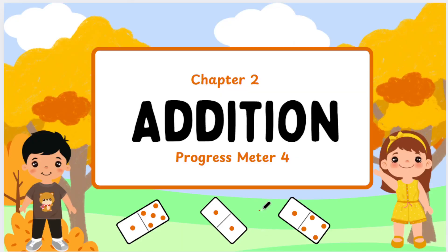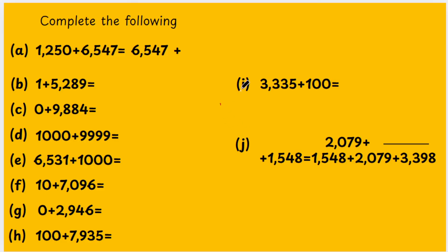Let's move on with some sums based on this. The first sum: 1,250 plus 6,547 equals 6,547 plus what? The same number is given, so what are you going to write? 1,250 — the first number. If you change the order, the answer is the same. What is 1 plus 5,289? What is the next number of 5,289? 5,290.